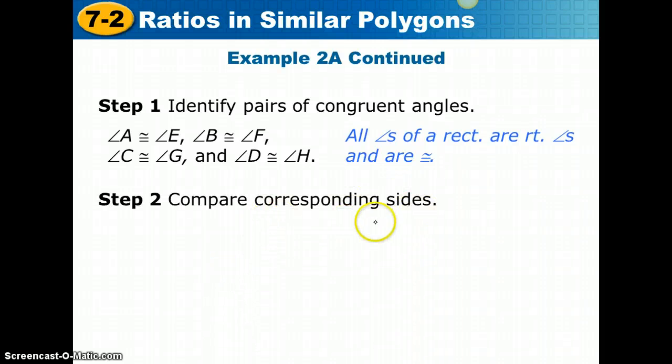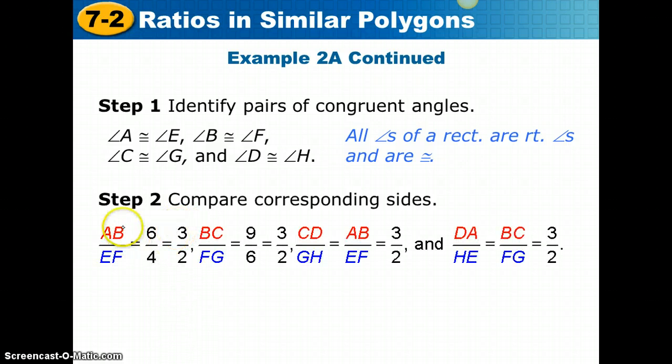Now we are going to compare the corresponding sides. AB is 6, EF is 4. So AB to EF is 6 to 4, which simplifies to 3 to 2. BC to FG: BC is 9, FG is 6, so 9 to 6 is also 3 over 2.